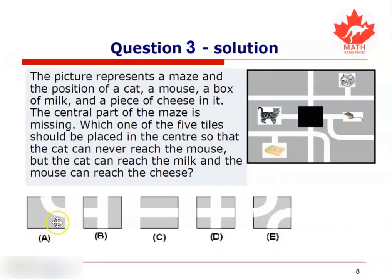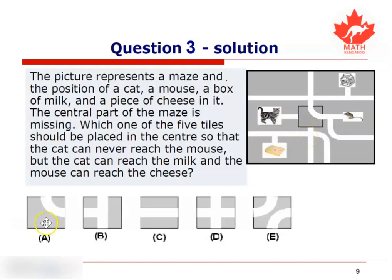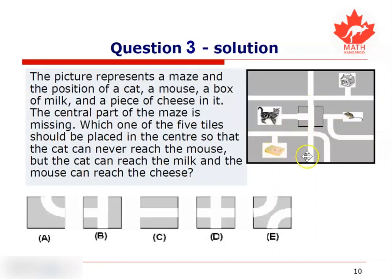Let's try the first tile. We'll place the first tile in the center of the maze. When this is done, notice that the mouse can reach the milk, but the cat is not able to go anywhere. This is not what we want, so clearly the first tile is not what we are looking for. Let's try the second tile. When we place the second tile in the center of the maze, notice that the mouse is not able to go anywhere. The cat is able to reach the milk, and the cat is able to reach the cheese. This is not what we want, so therefore the second tile is also not what we are looking for.